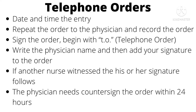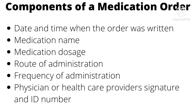We're going to move on to components of a medication order. The components are the date, time when the order was written, medication name, medication dose, route of administration, and frequency of administration. The physician or healthcare provider's signature must be on that order as well. And don't forget the physician ID number — that's another answer choice we often overlook on a SADDLE question for a medication order. The physician ID number is a very important topic.